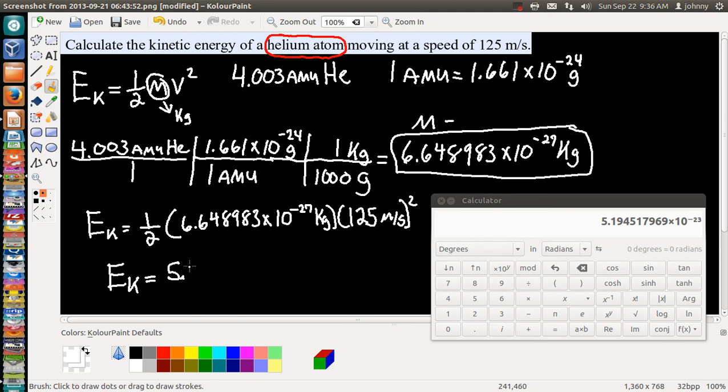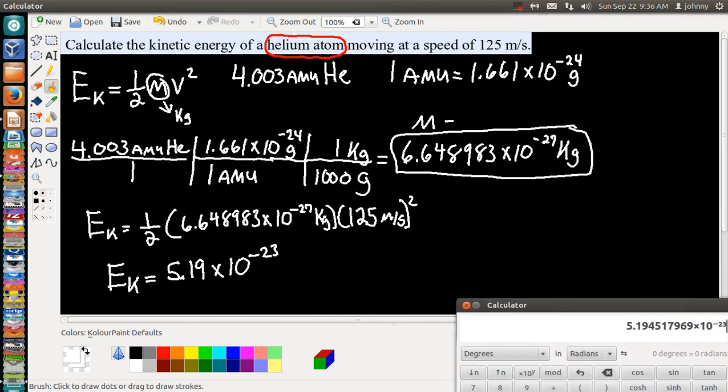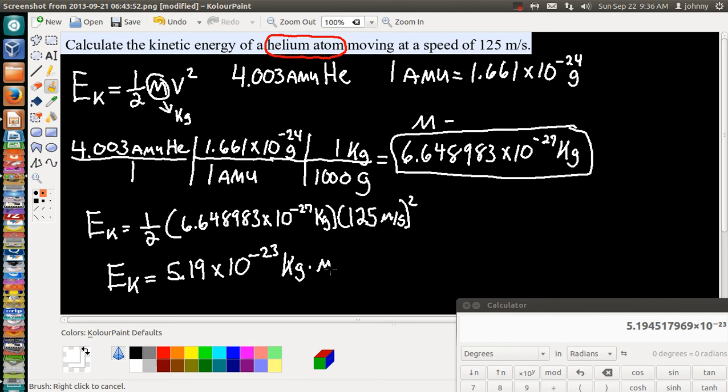Now the question is, what are our units? Our units are kilograms times the meter squared divided by the second squared. If you look, this unit here is a joule. So our answer is 5.19 times 10 to the negative 23rd joules.